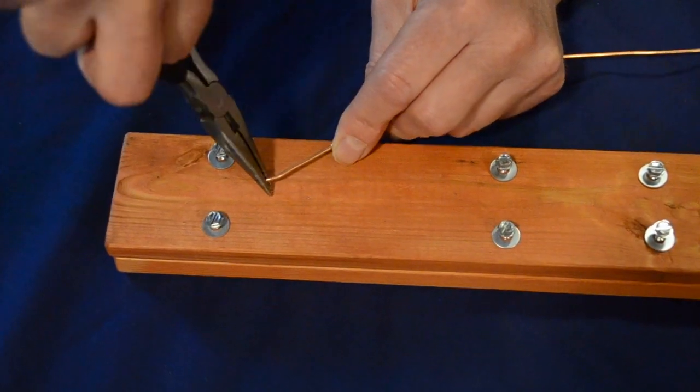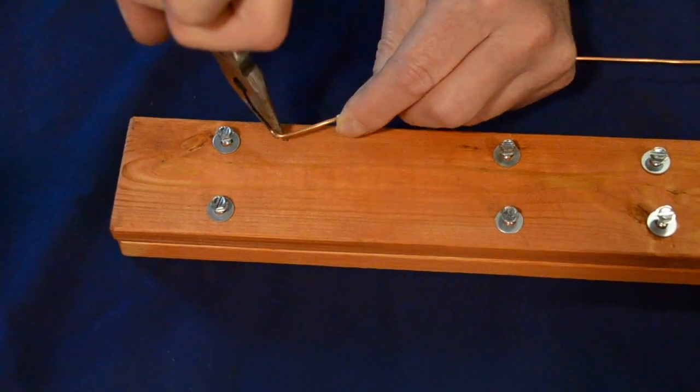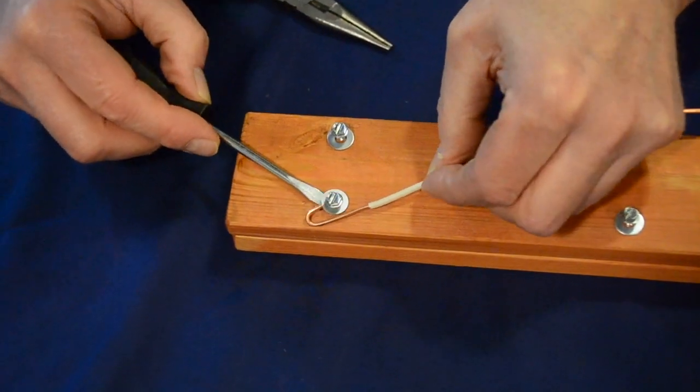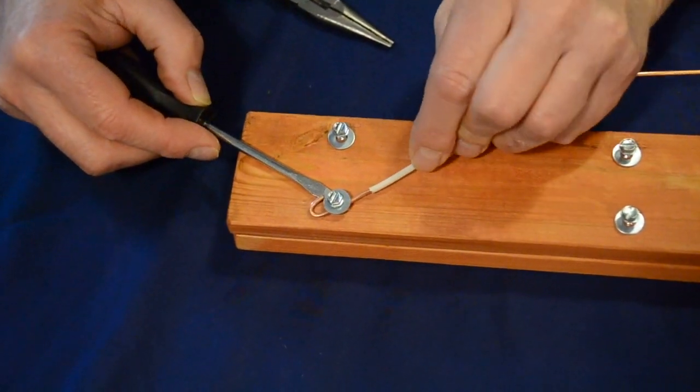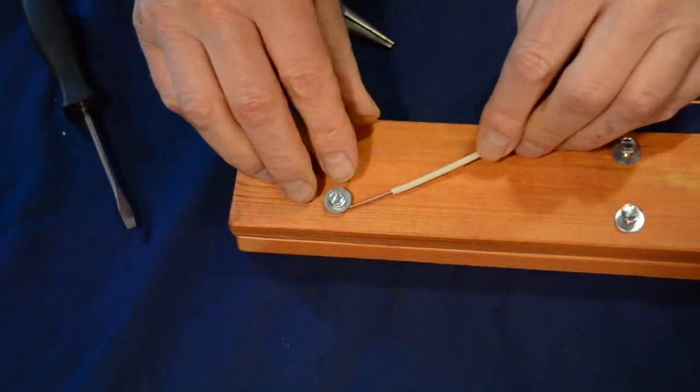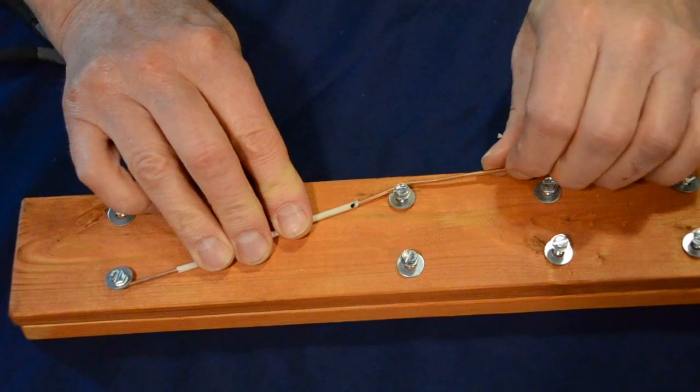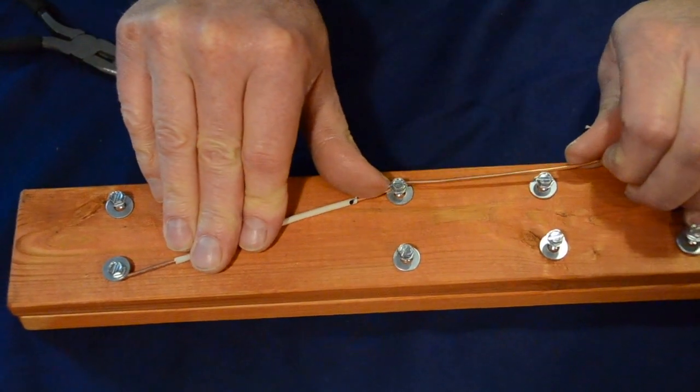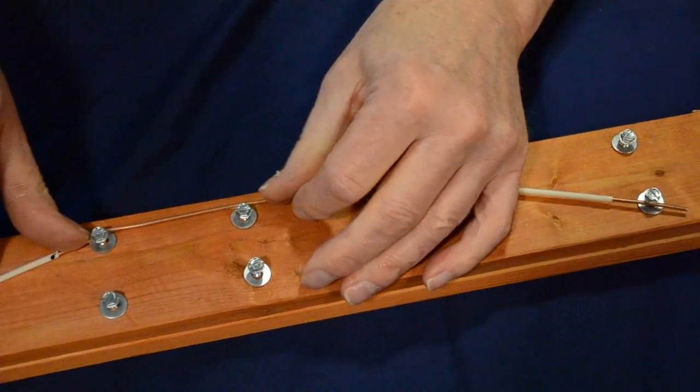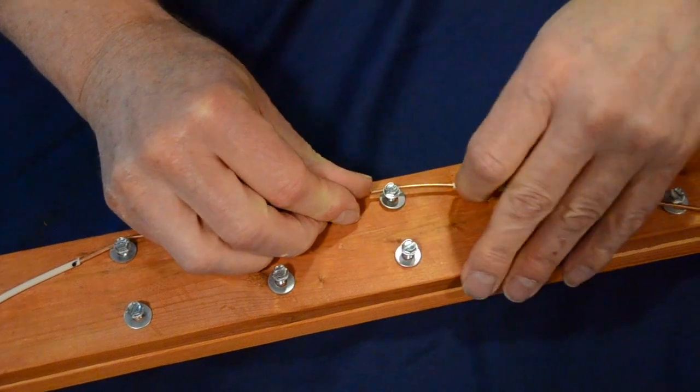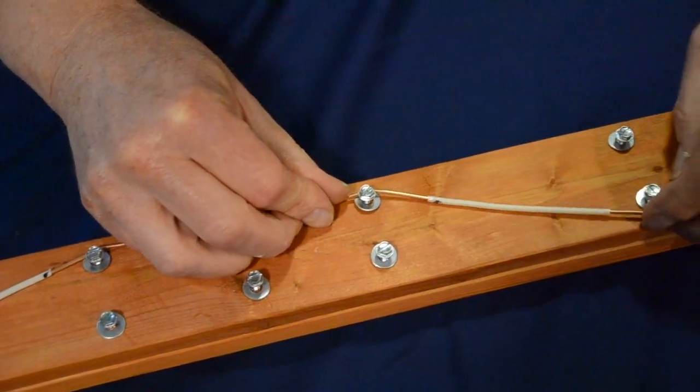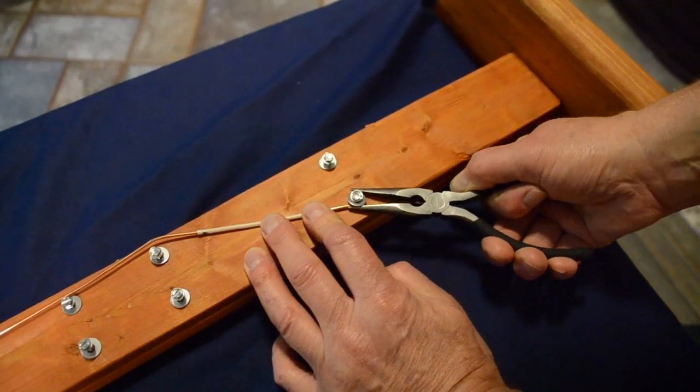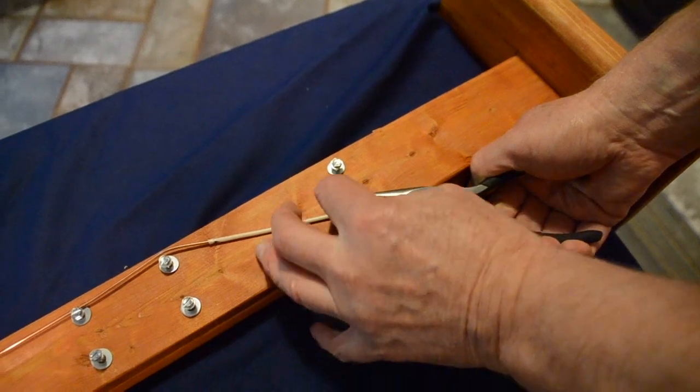Using a pair of needle nose pliers make a loop at the end of one of your wires and wrap it around the screw. Make sure to place it beneath the washer. Follow along the length of the wire making sure the bare sections are up against the screws. Loop the wire around the screw on the other end and then do the same for the other wire.